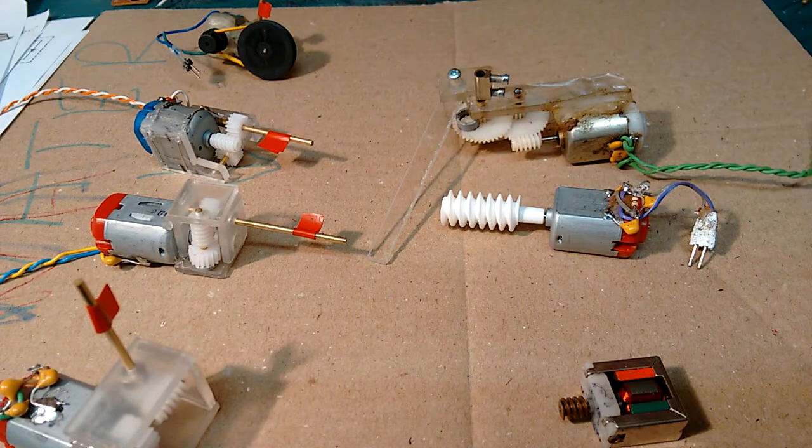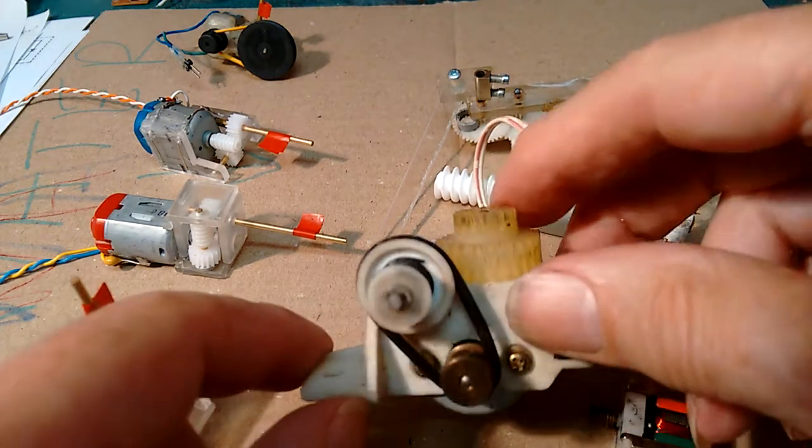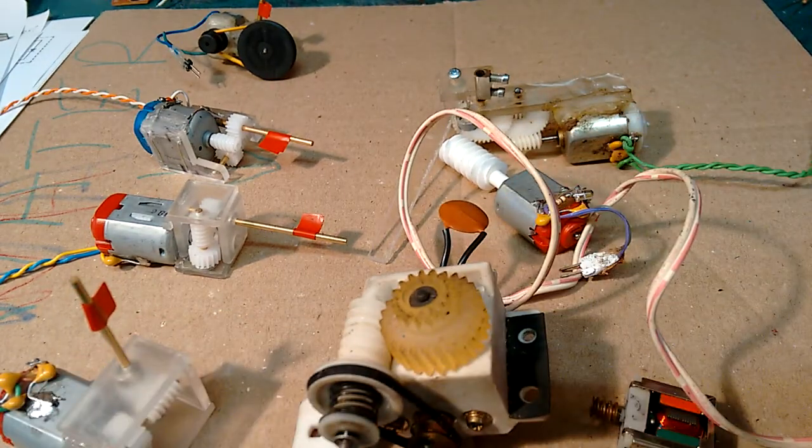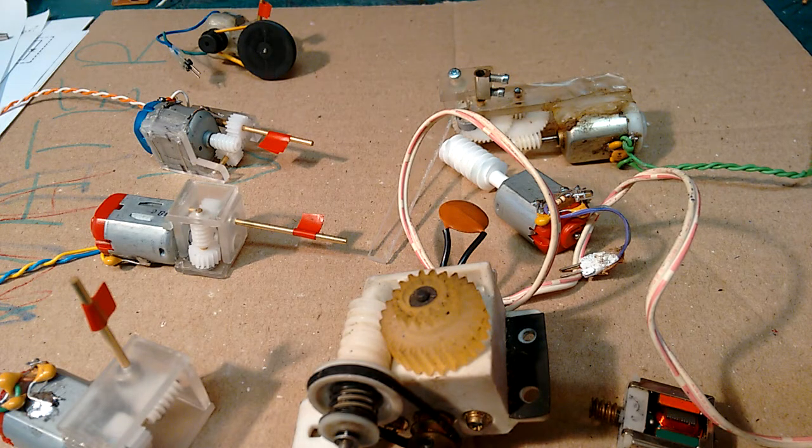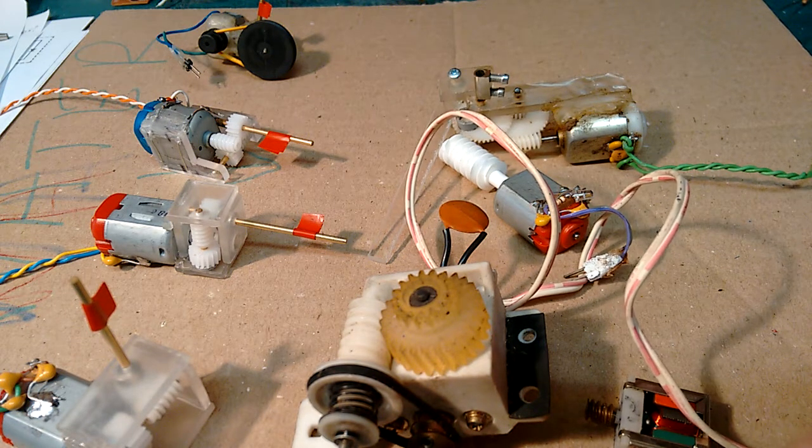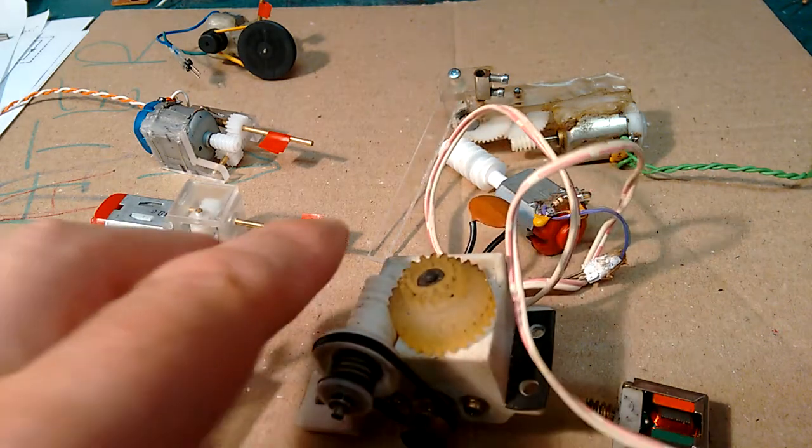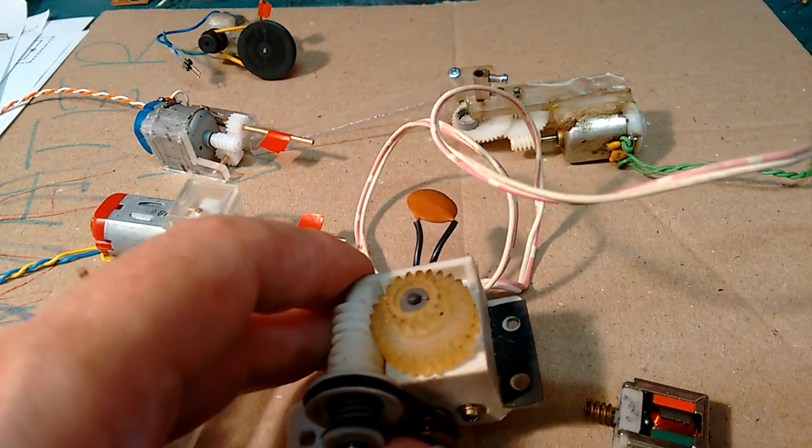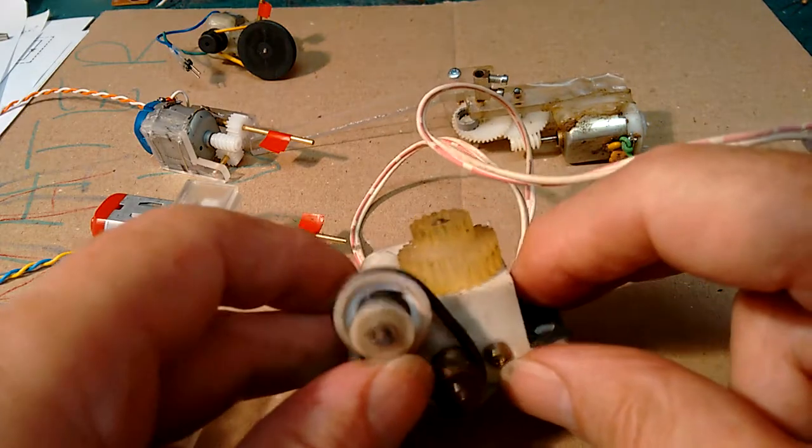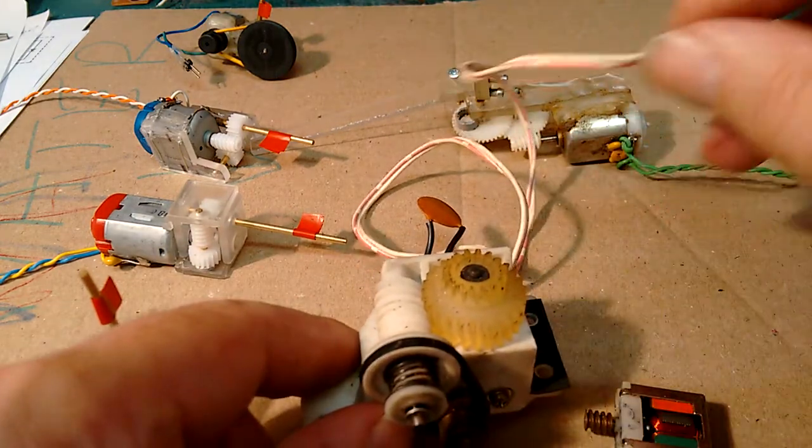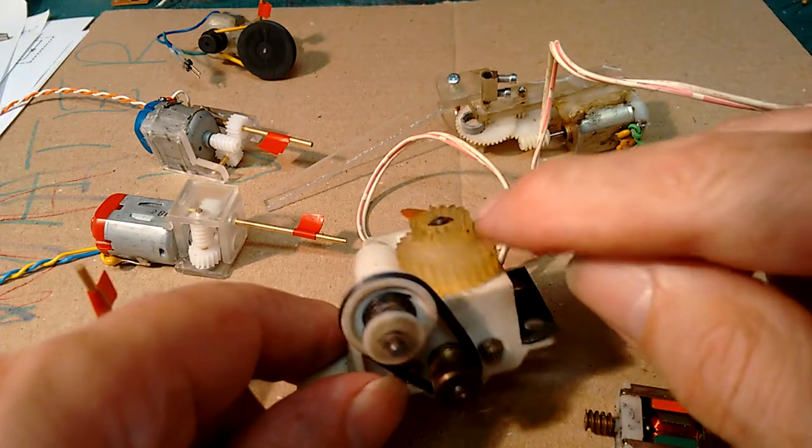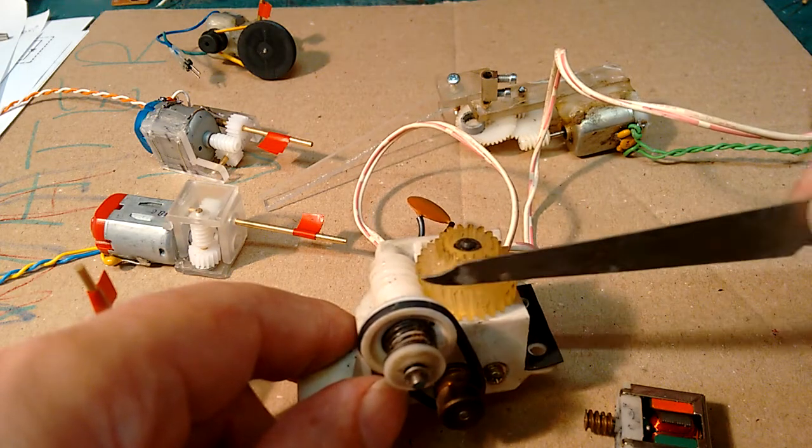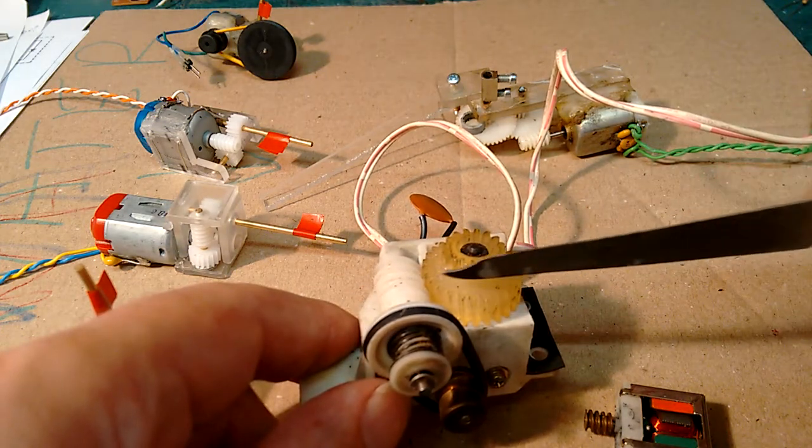And then pulling things apart, love pulling things apart, came across this. It's actually the motor that drives the cassette tray, not the cassette tray, yeah the cassette tray on a video recorder. They used to have a tray that came in and out so you could load the thing. So this gear up at the top, this one probably went on a linear gear, on a rack, so that the rack moved in and out.